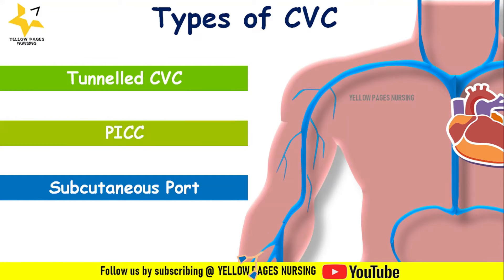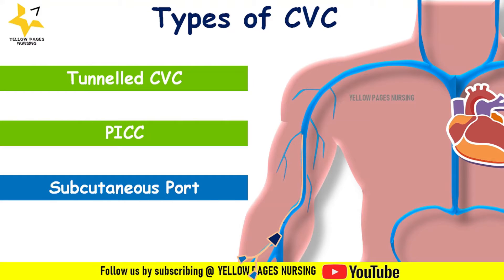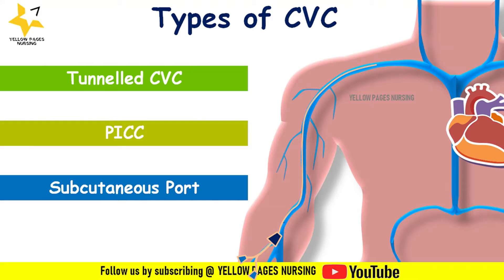A PICC line is a tube placed in the large vein in the inner elbow area. It is threaded through the veins to rest above the right atrium of the heart, and the other end of the catheter stays outside the body with multiple lumens.